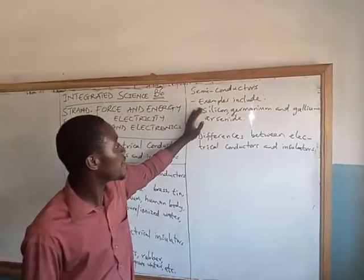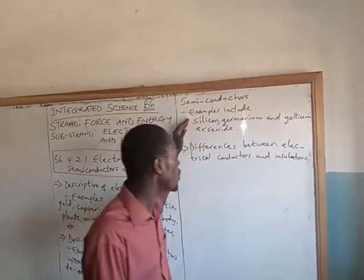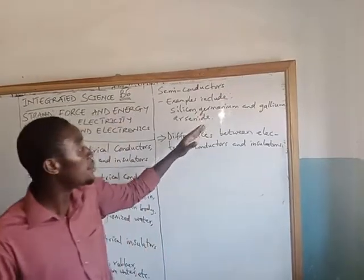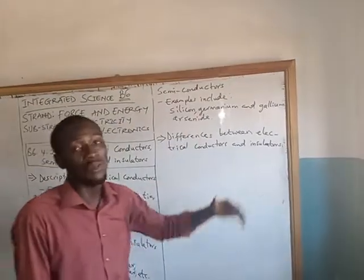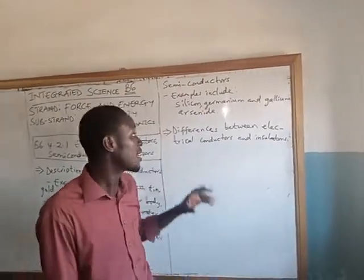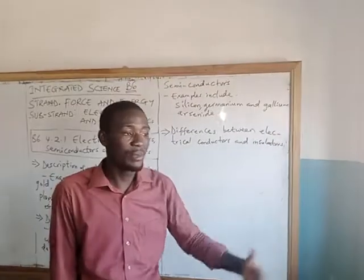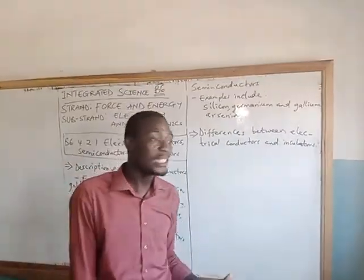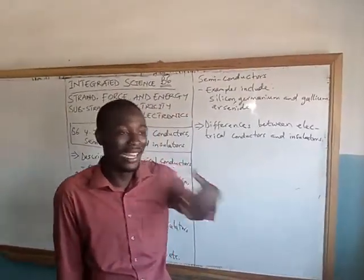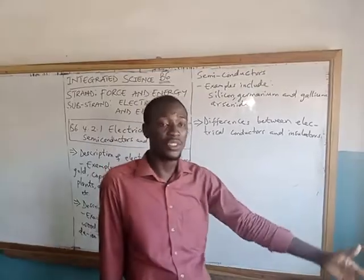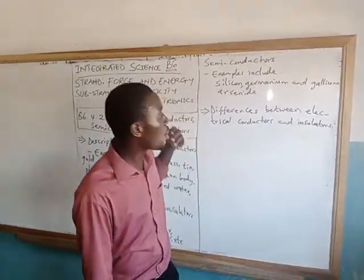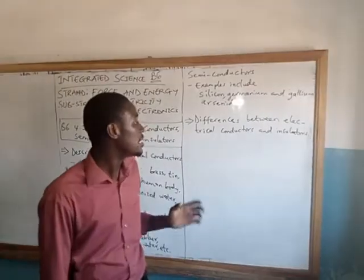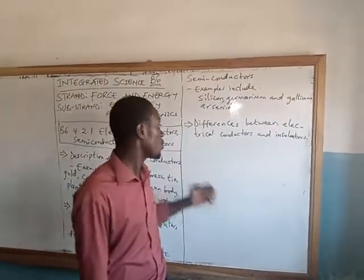Examples of these semiconductors include silicon, germanium, and gallium arsenide. These are special materials that are able to conduct electricity to some extent, and can conduct more easily if we connect them to an extra electric source or if we increase the temperature.